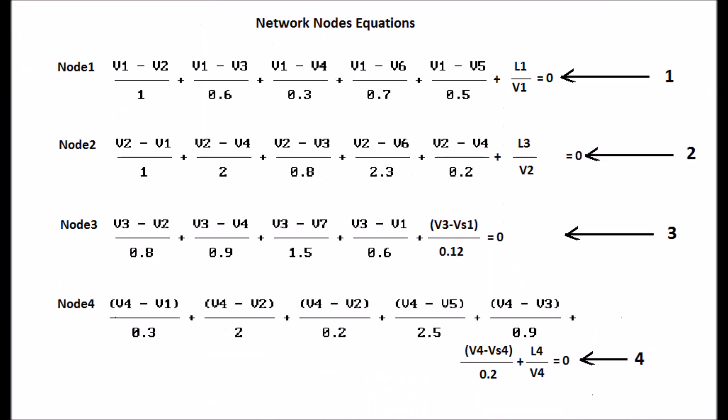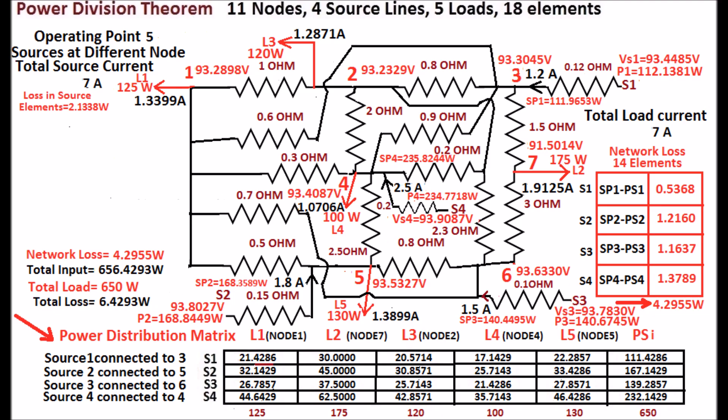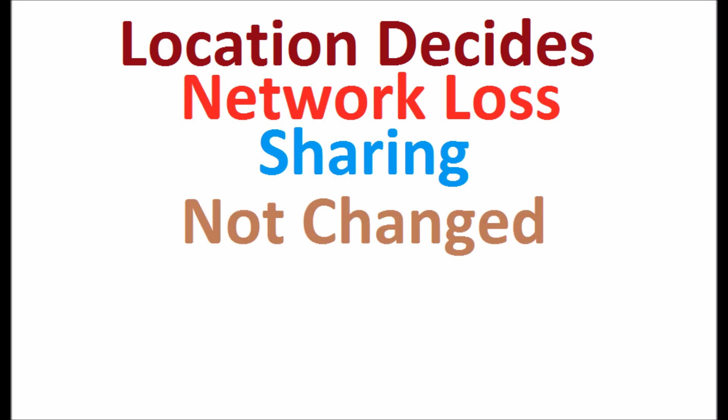The equations are shown for finding operating point 5. Sharing is the same. The network loss is 4.2955 watts for the same load of 650 watts. Location decides the network loss, but sharing is not changed.